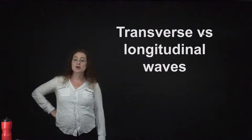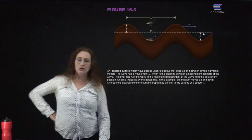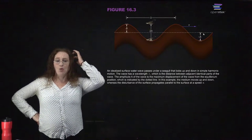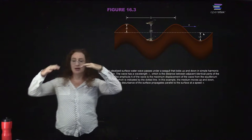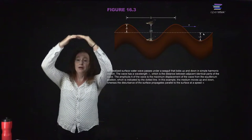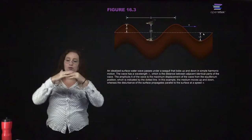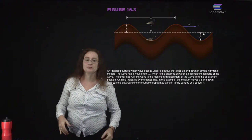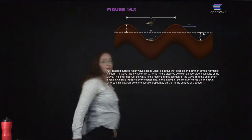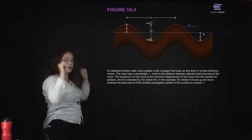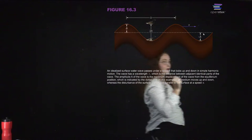We're going to start by talking about transverse versus longitudinal waves. In a water wave, the water at a given point moves up and down, but the water is not actually moving left to right — it's not moving forward. This is called a transverse wave because the wave is moving in one direction, and the water is moving in another. In a water wave, the wave travels horizontally but the water goes up and down.